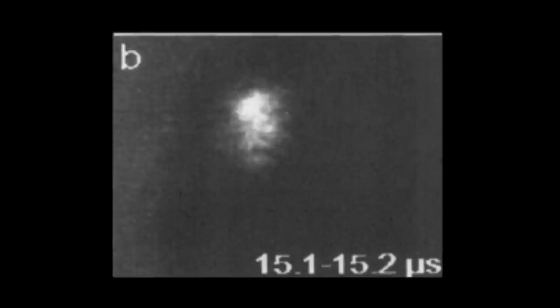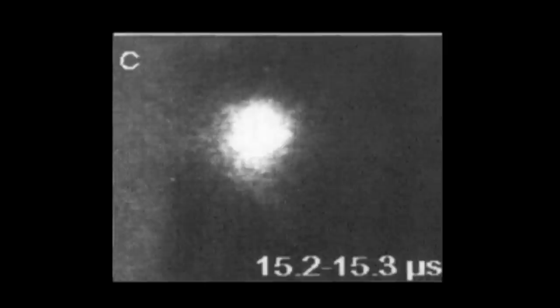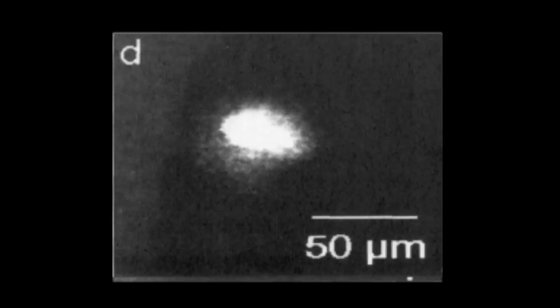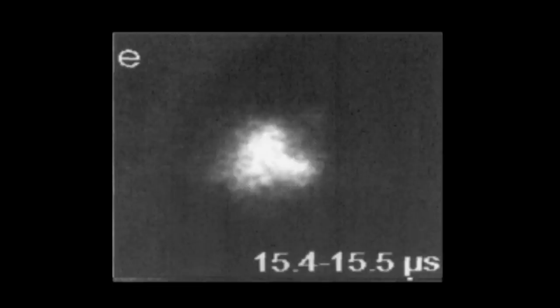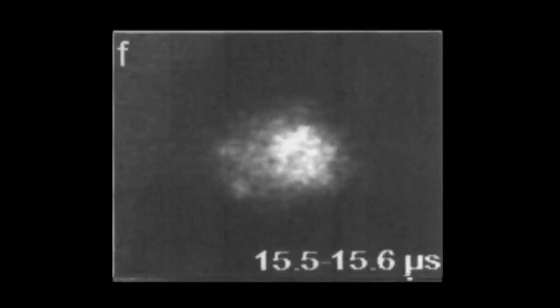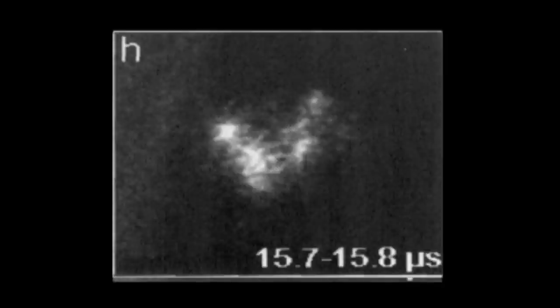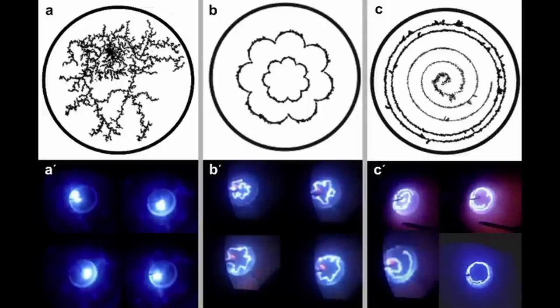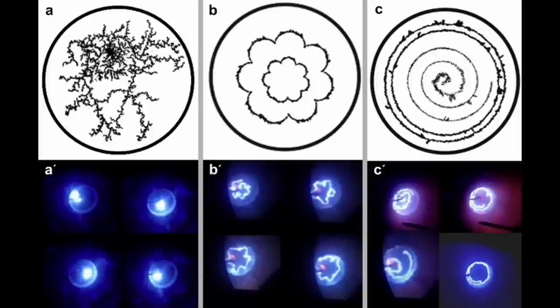One of the most striking features of cathode spots is that almost all parameters are fluctuating, like arc burning voltage, power input, ion production, electron temperature, ion charge state and velocity, and microparticle density and velocity. Perhaps the most obvious one is the motion of the spots on the cathode surface. Spot motion is not the motion of the matter, but a process associated with ignition and extinction concentration of active emission sites.